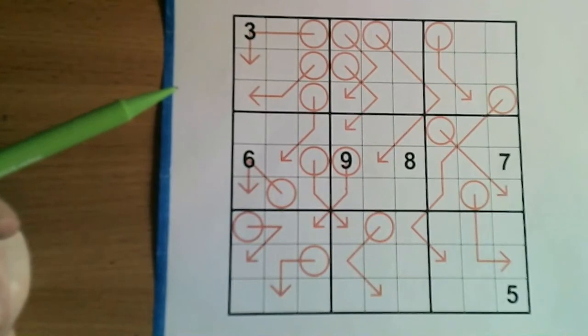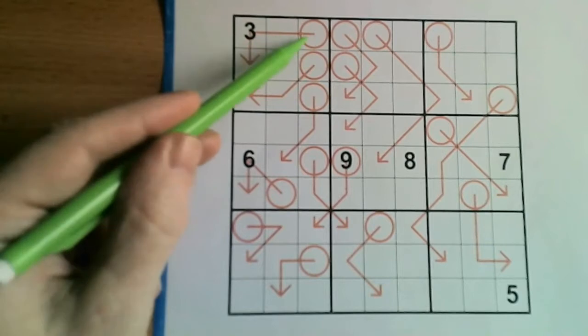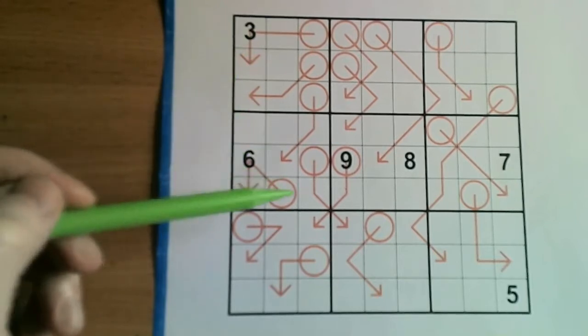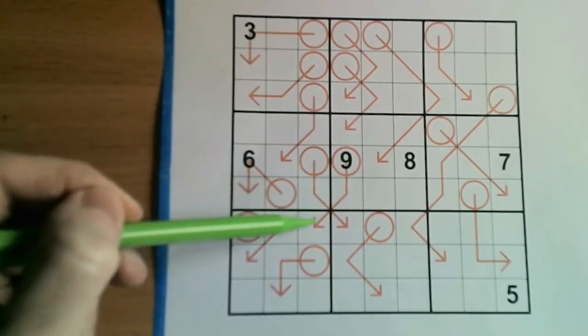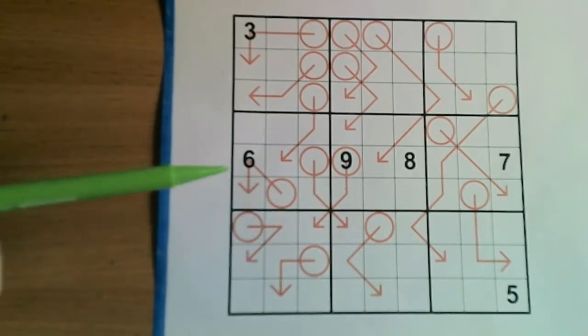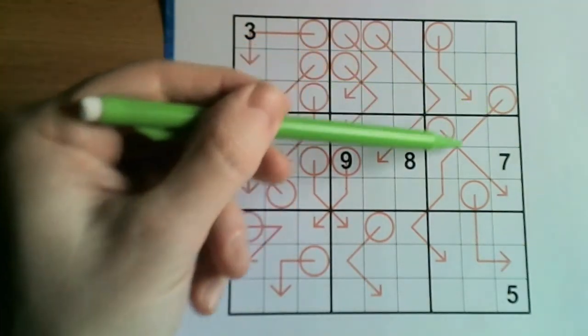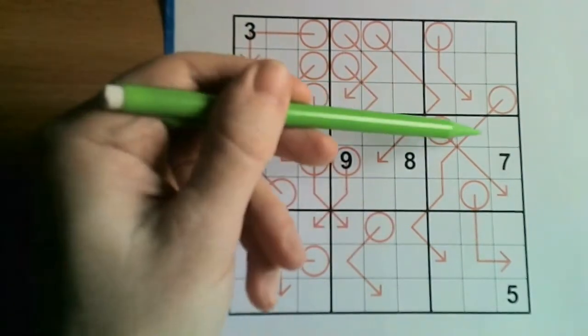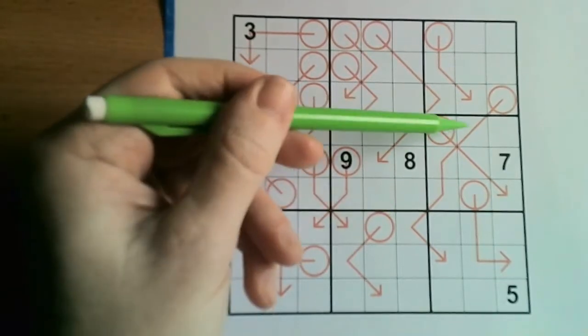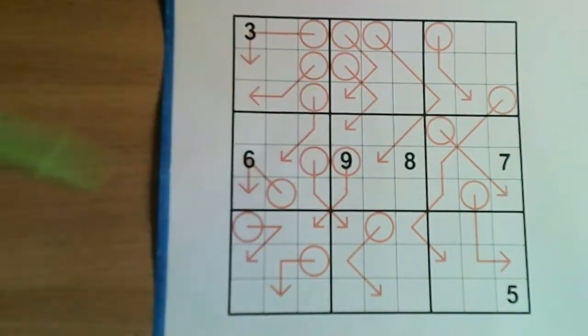Normal Sudoku rules apply, so that means that within each box a number cannot repeat along the body of an arrow. However, if the body of the arrow does cross different regions, like here where it goes diagonally, then a number can repeat. So for instance, this big long arrow here, there's no problem at all having a 2 there and a 2 there, because they're in different boxes, but you couldn't have a 2 here and a 2 here, because that would break the normal Sudoku rule that you cannot repeat a number within a region.